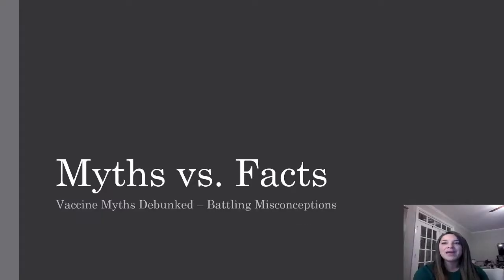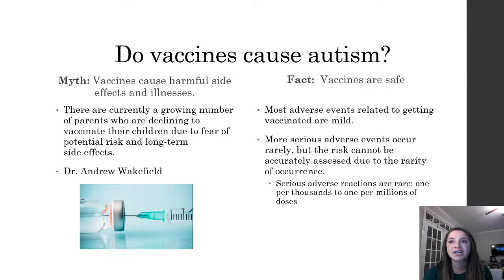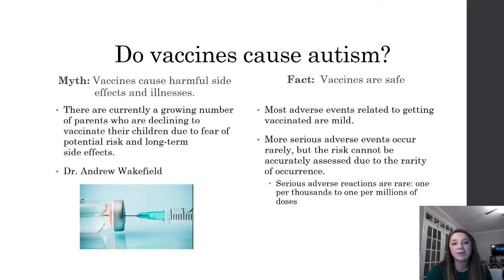My name is Stephanie. I will be going over myths versus facts regarding vaccination information. There is a lot of misinformation regarding vaccines, and it's important to be aware of misconceptions in order to debunk incorrect information. Perhaps the most controversial reason parents choose not to vaccinate is the fear that vaccines such as MMR can cause autism. This widespread fear was published in a study by Dr. Andrew Wakefield, a British surgeon, in the prestigious medical journal the Lancet. The article suggested MMR caused or contributed to autism. Since the study was published in 1997, it has been completely discredited due to ethical violations and serious procedural errors.